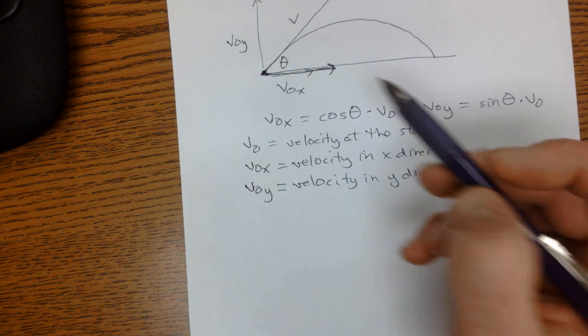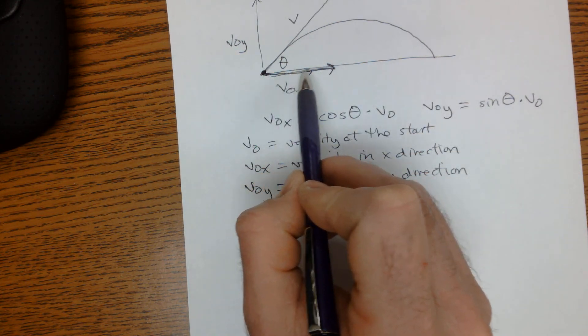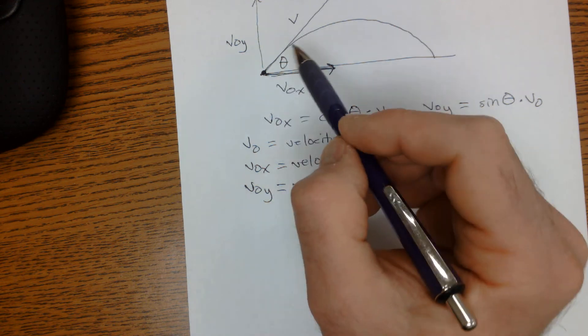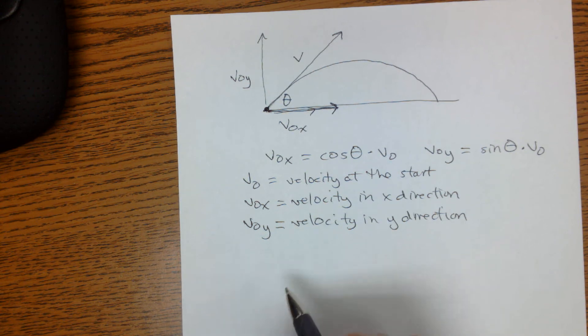Remember, these velocities will change except in the x direction. The x velocity stays constant, but the y velocity decreases as it goes up and increases as it falls back down.